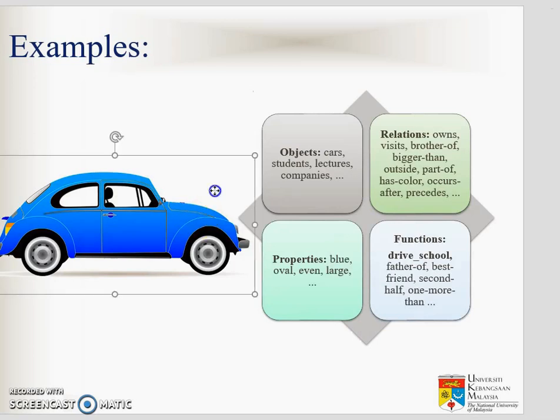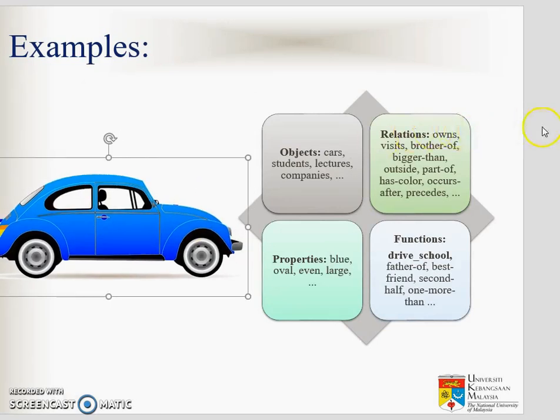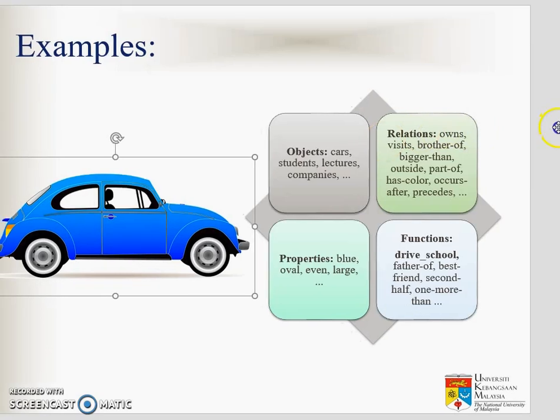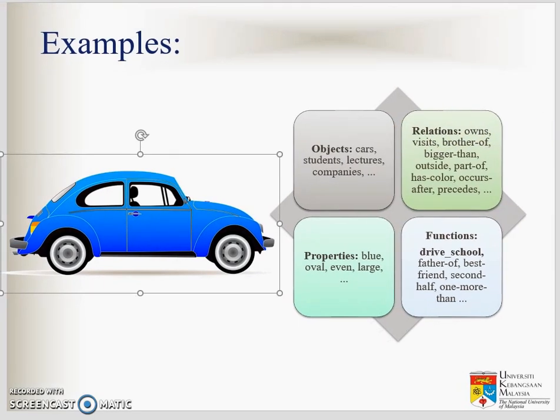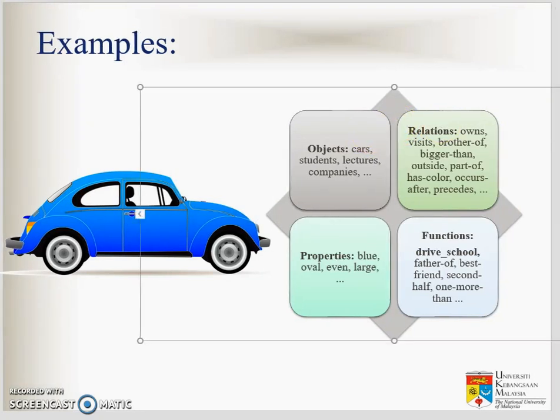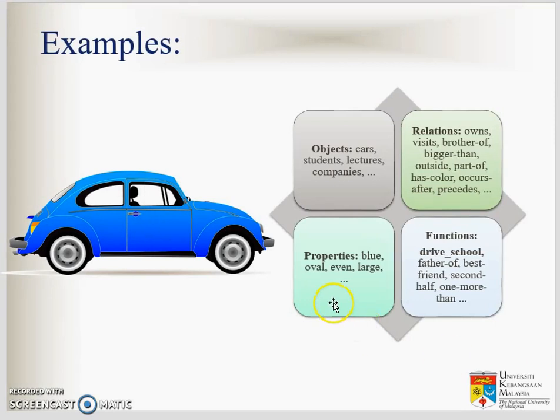To represent a car. The object is car. And then the properties is blue. The relationship: maybe this car is owned by, this car is used to visit someone, bigger than what, part of what, has color of what. So that's the relationship.